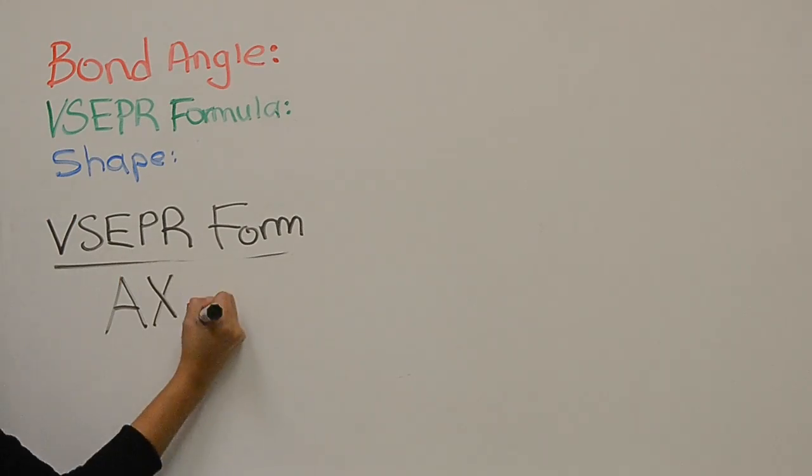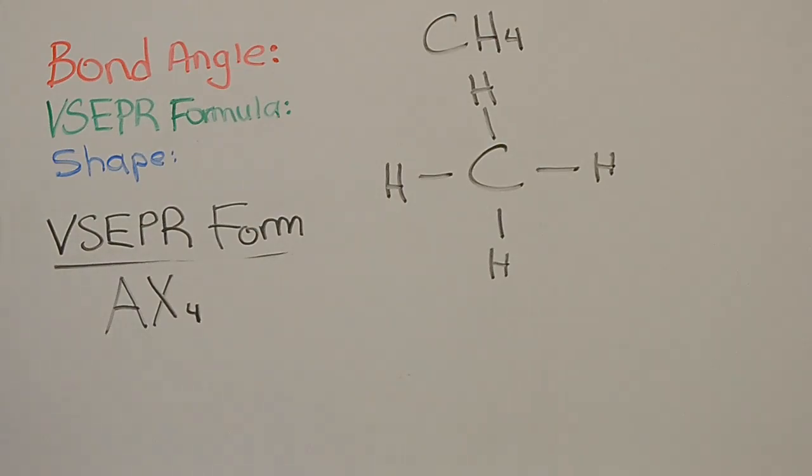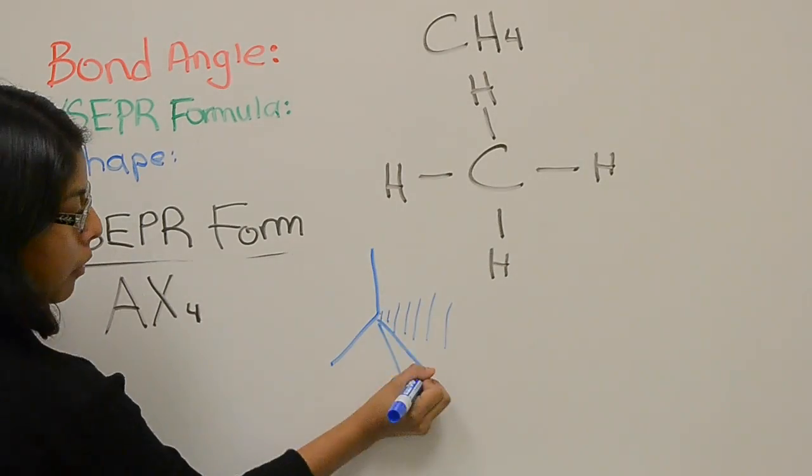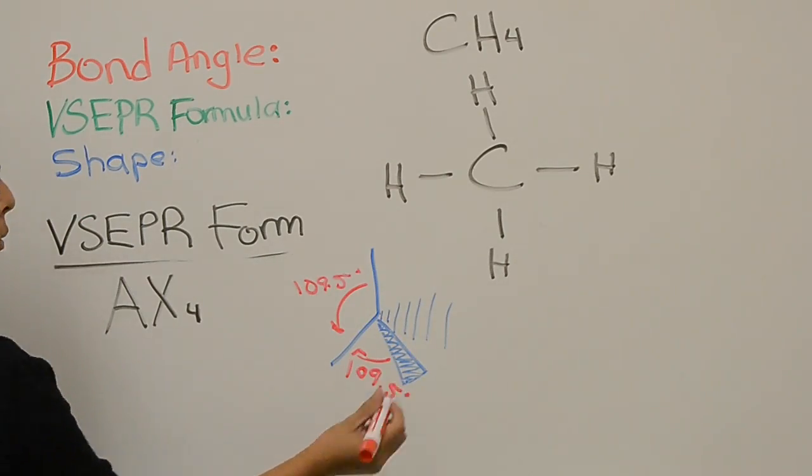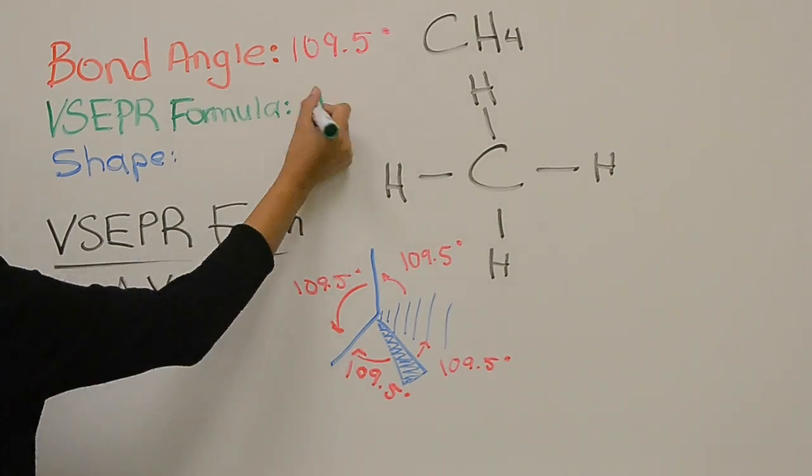Now we have methane with a VSEPR form of AX4 and its bond angle is 109.5 degrees. The shape of this molecule is a tetrahedral.